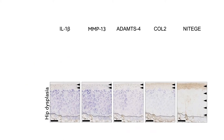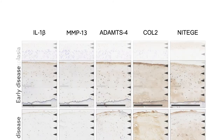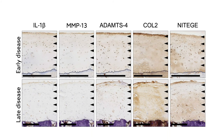To be sure, hips with dysplasia did express the same molecules, but their expression was confined to the superficial zone of cartilage. In hips with impingement, these molecules were expressed in all cartilage zones. This more extensive pattern suggests that inflammation due to impingement results from chronic shear stress.